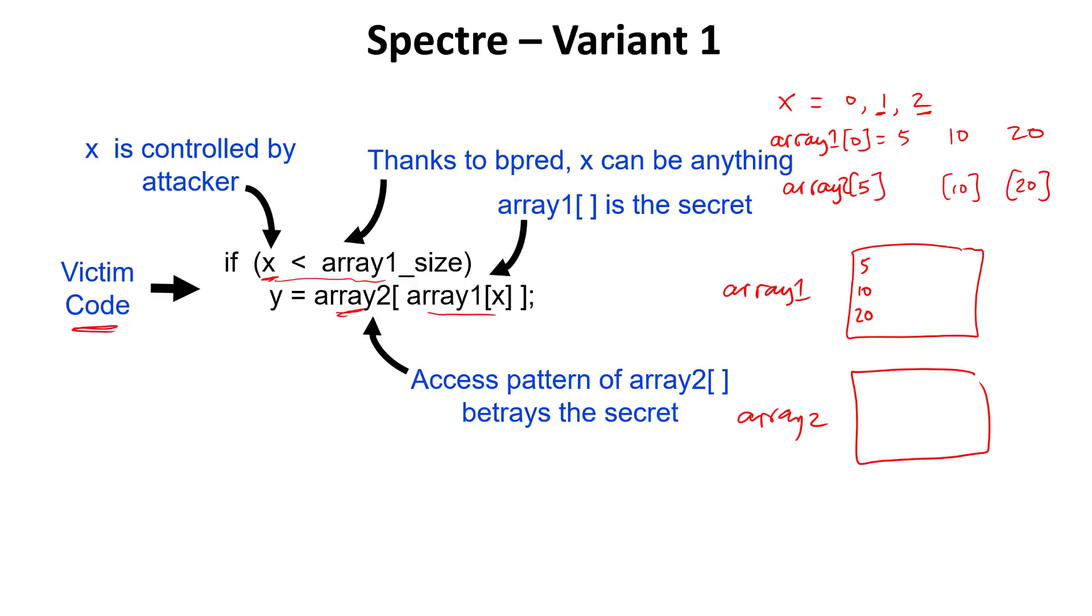What's happening over here is that the internal secrets of this victim program, which might be in array 1, are now being betrayed by the access pattern to array 2. Based on the value 5, I look up index 5. Based on the value 10, I look up index 10. Based on the value 20, I look up index number 20. Even though I'm never exposing the contents of array 1, I am exhibiting an access pattern which may reveal my secrets.